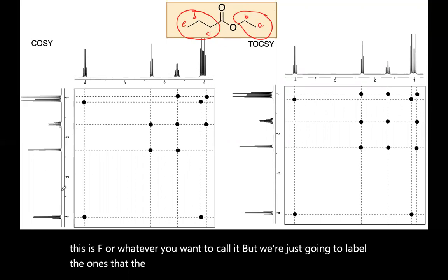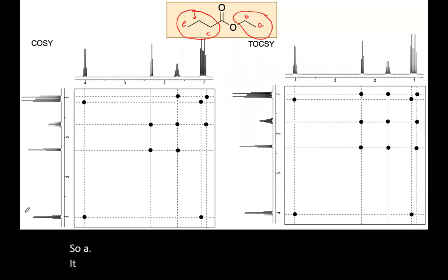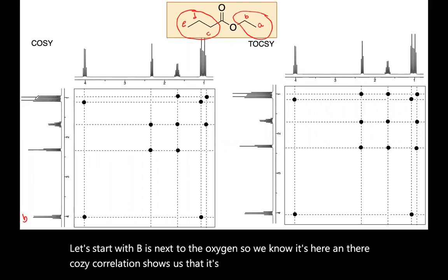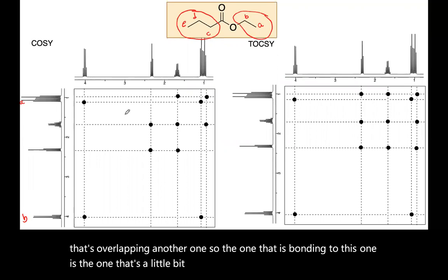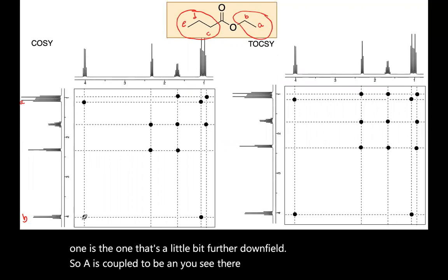So A, or let's start with B, is next to the oxygen. So we know it's here. And the COSY correlation shows us that it's coupled to a multiplet triplet that's overlapping another one. So the one that is bonding to this one is the one that's a little bit further downfield. So A is coupled to B and you see there are no other couplings, just A to B.